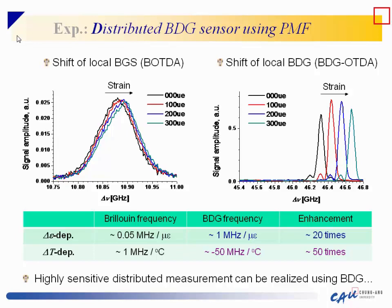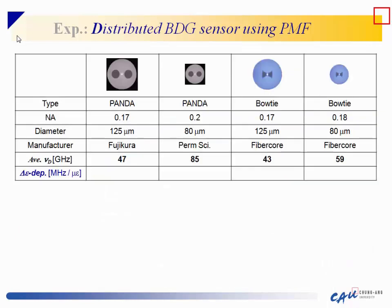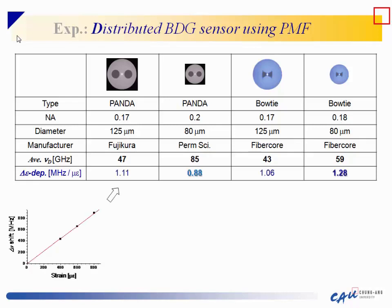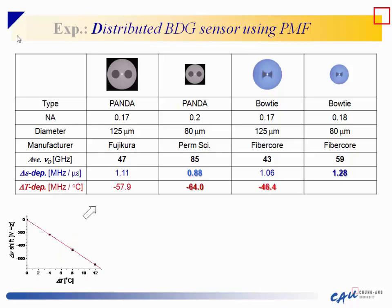The characteristics of BDG depend on fiber type. We tested four different fibers: PANDA fibers with different cladding diameters and NA, and bow-tie fibers with different cladding diameters. The BDG frequencies differ due to different birefringence amounts. Strain dependence is around 1 MHz per microstrain on average, and temperature dependence also differs slightly among fibers. There is also a small correlation between the absolute BDG frequency and the strain or temperature dependence.